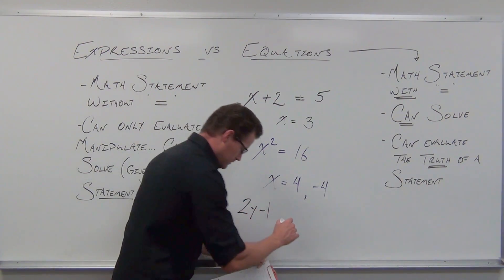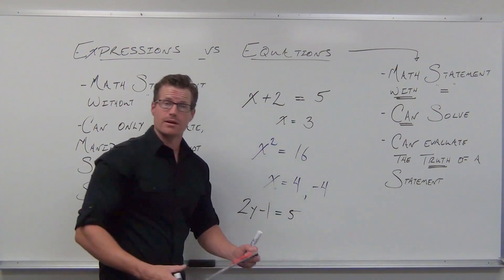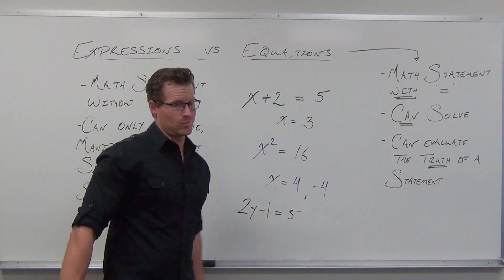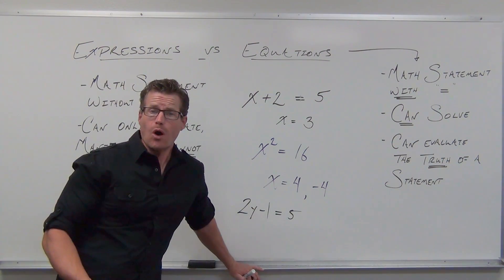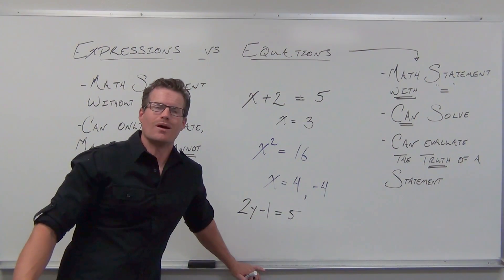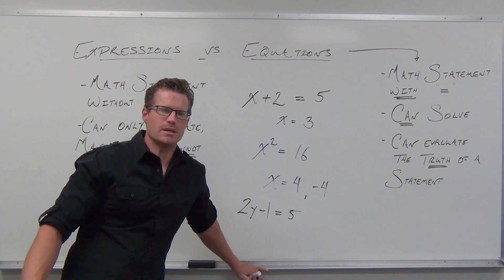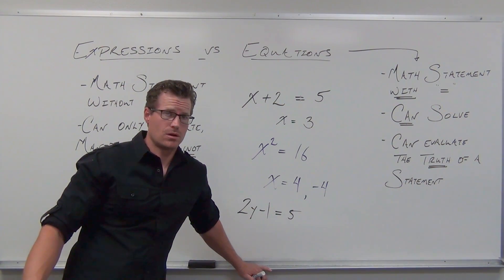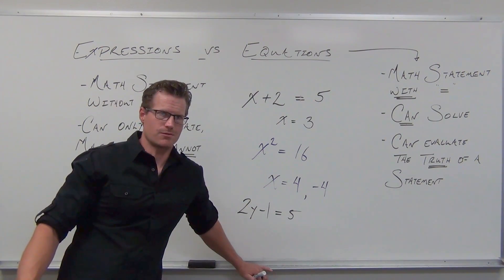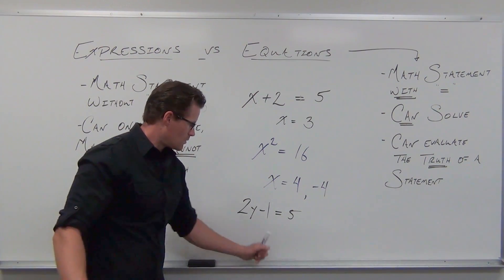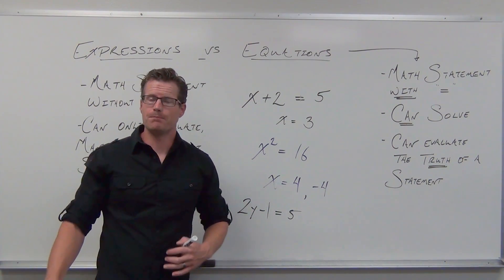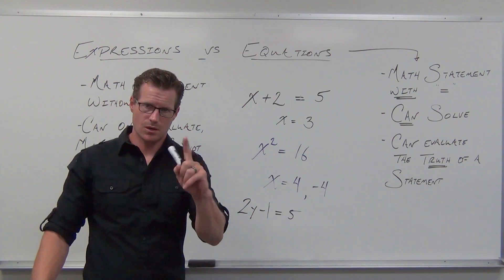As soon as we put in that equal sign, now we've got an equation. The next question to ask is: if you have an equation, can you solve it? What's the answer here? How many answers should we get? Look at your variable — what's the power? The superscript isn't even written. What's the power of your variable right now? Right there we've got a power of one, so we should be expecting only one answer. It's called a linear equation.